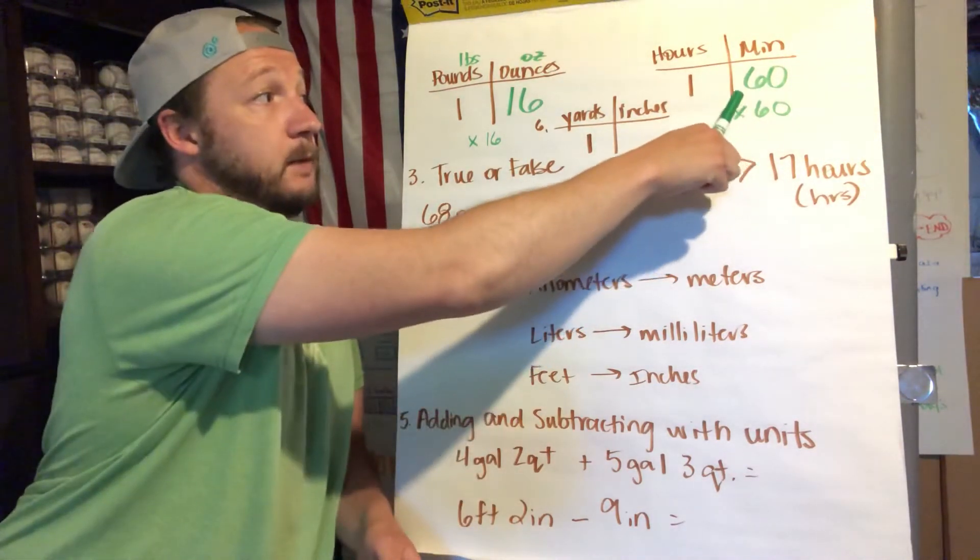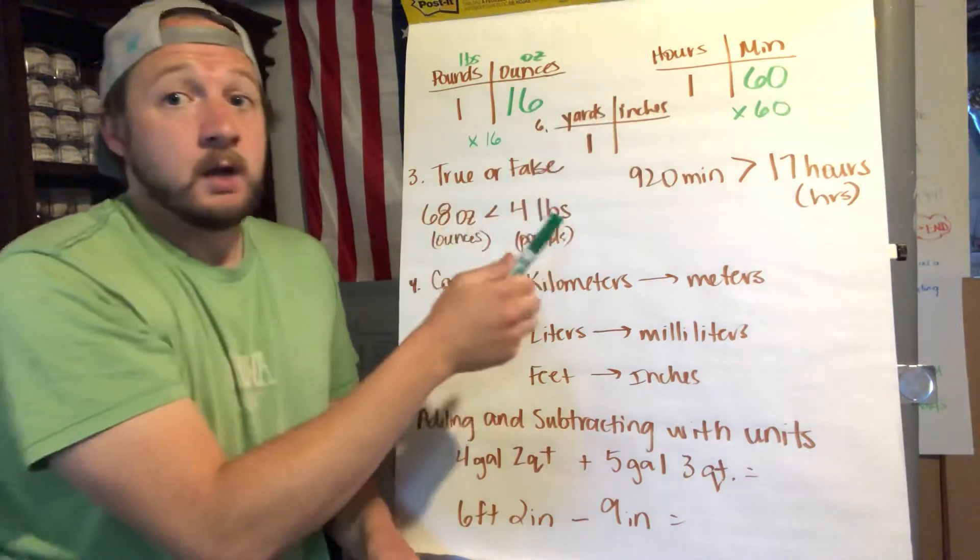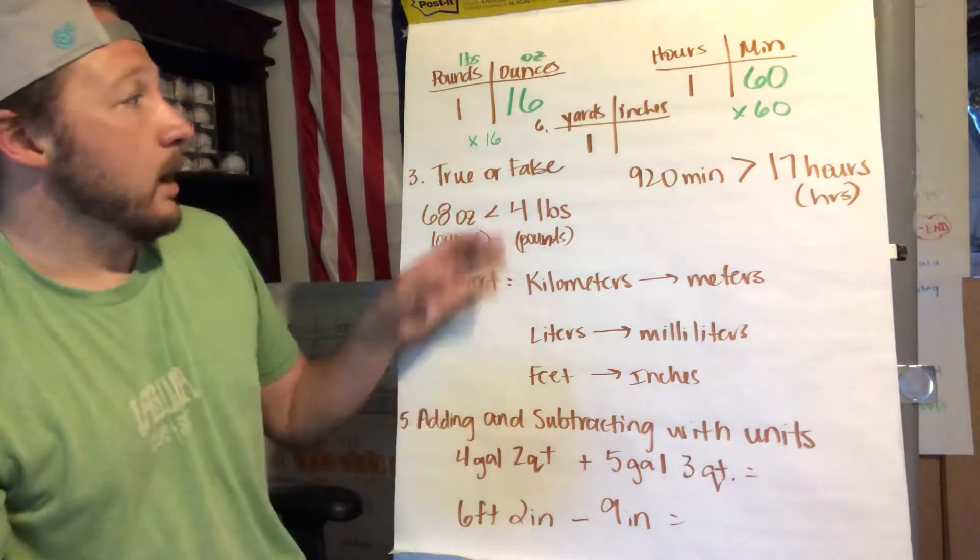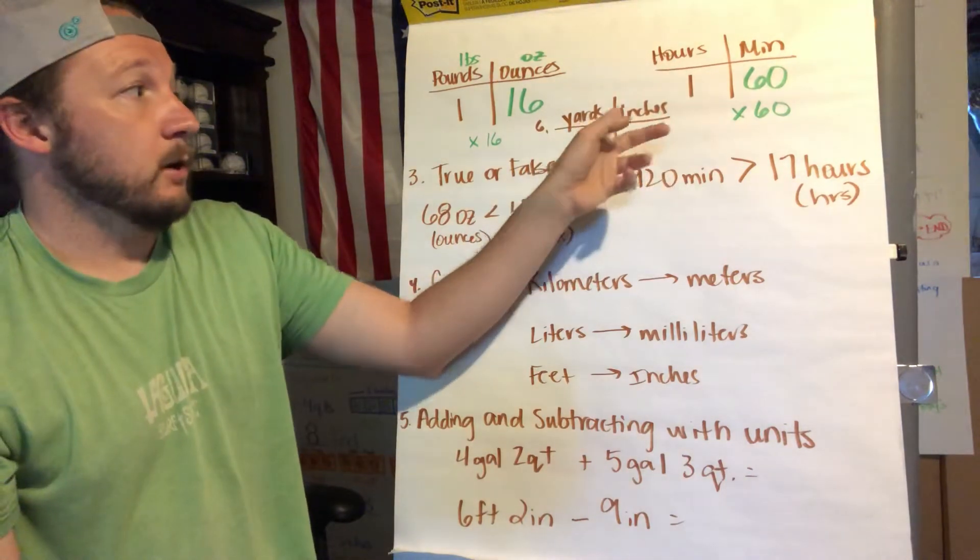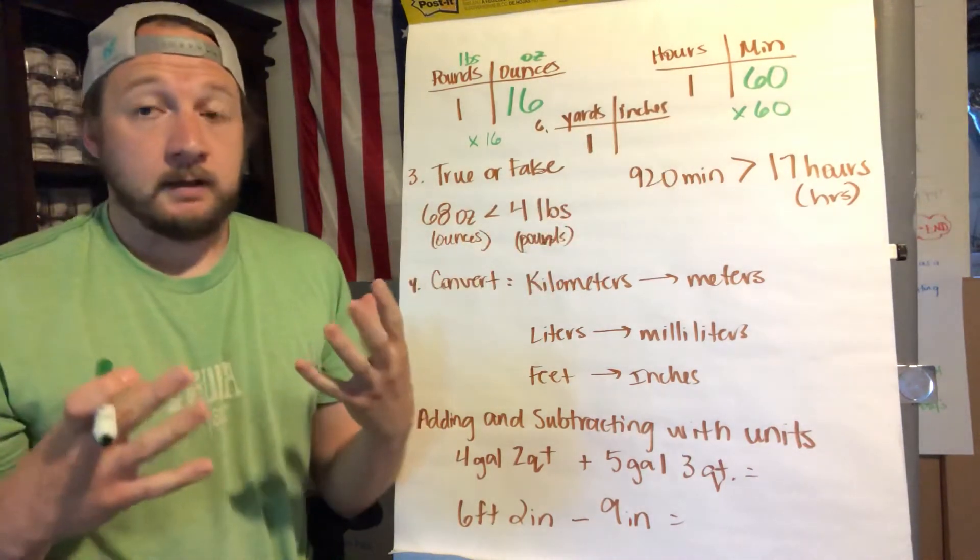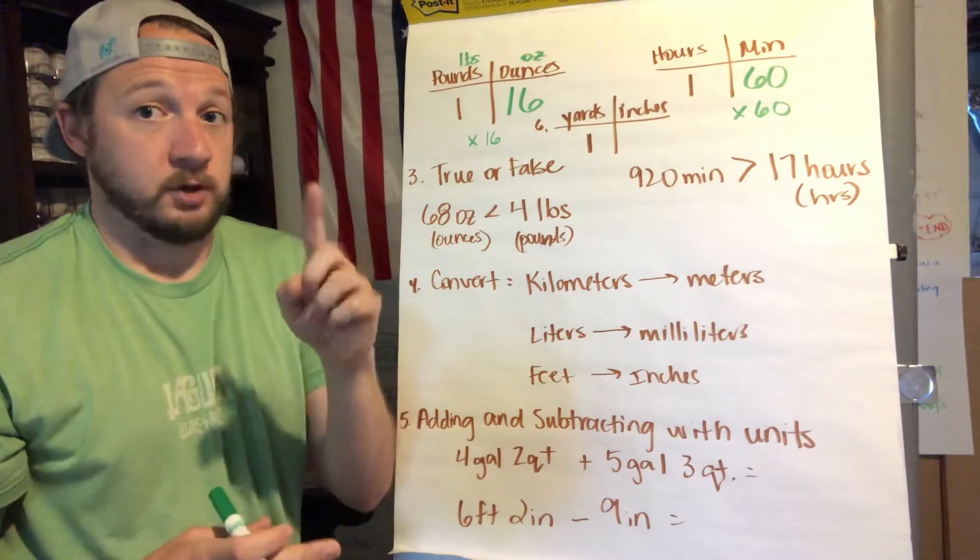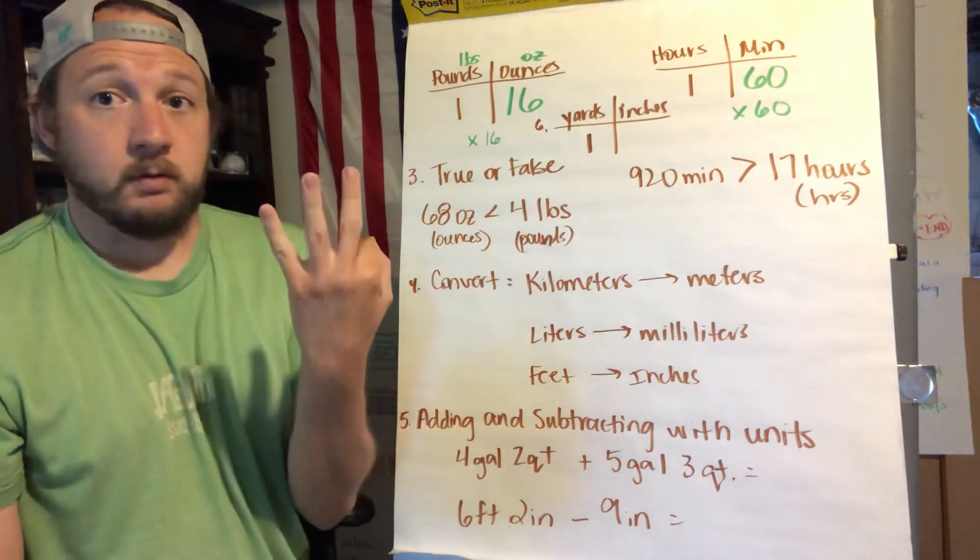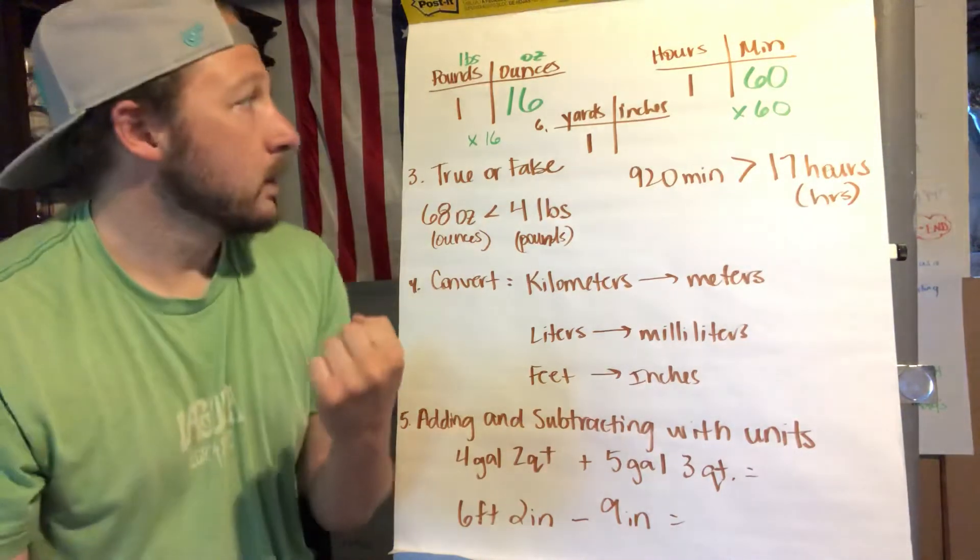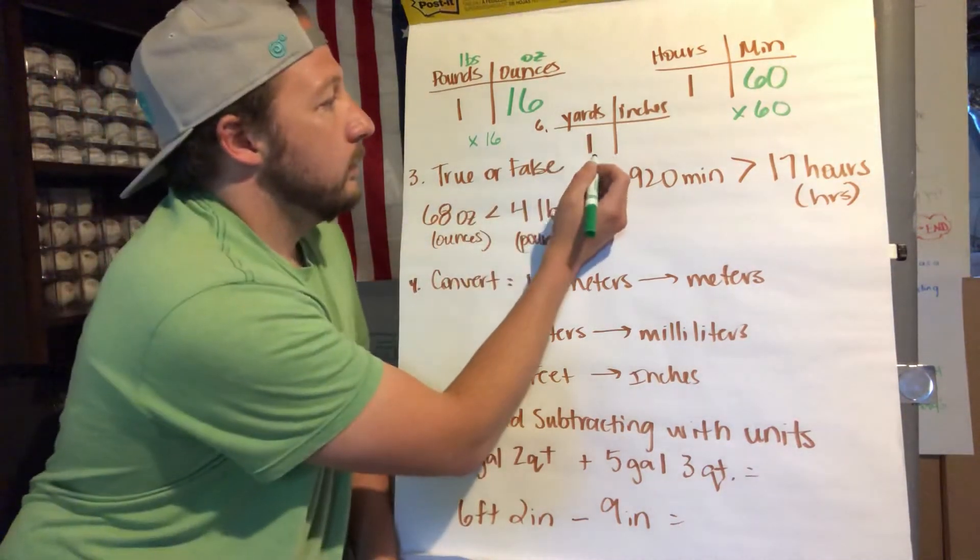But just in case you forgot, one hour is 60 minutes, so you're multiplying by 60. So if you have two hours it's multiplying by 60, three hours you multiply by 60 to find the number of minutes. Okay, if they give you the total number of minutes you have to divide by 60 to get the hours.